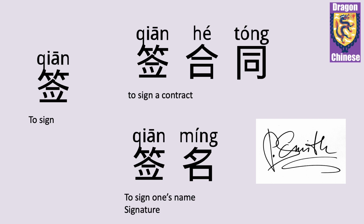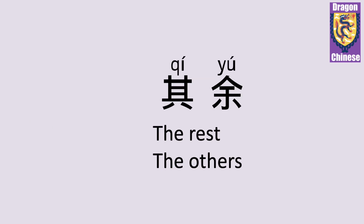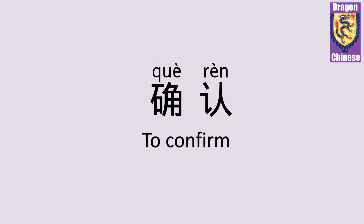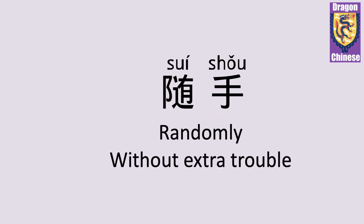签名 — to sign one's name, signature. 签名. 其余 — the rest, the others. 其余. 身份 — identity. 身份. 确认 — to confirm. 确认. 随手 — randomly, without extra trouble. 随手.